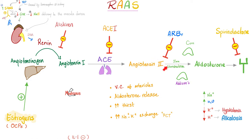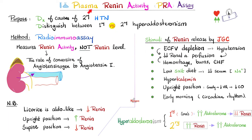Angiotensin 2 has two functions. First, as the name suggests, it constricts blood vessels to raise blood pressure. Second, it signals the adrenal cortex — specifically the zona glomerulosa — to produce aldosterone, so that aldosterone can reabsorb salt and water, which also helps raise blood pressure back to normal.